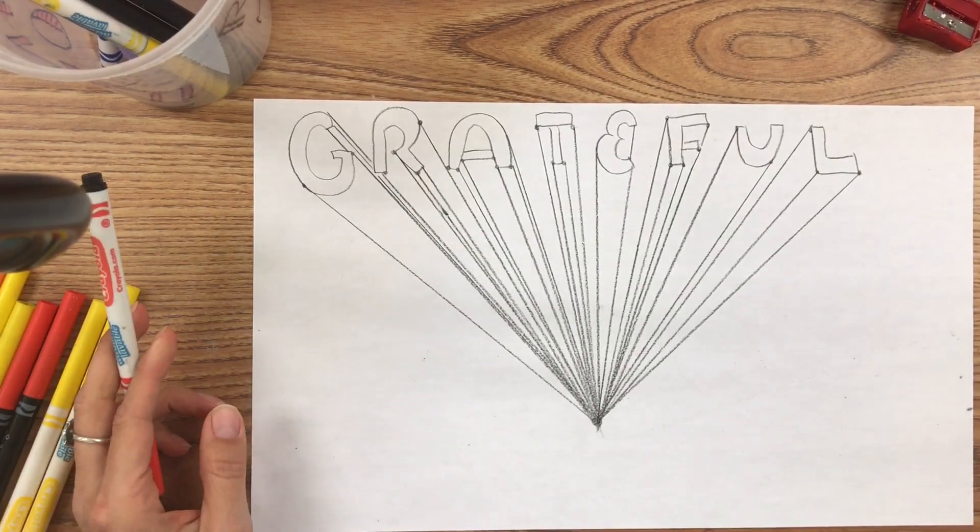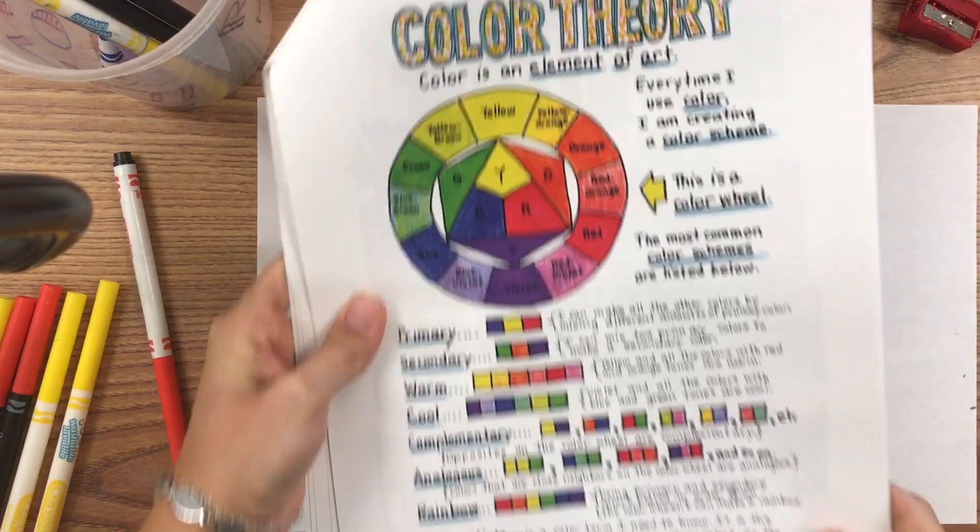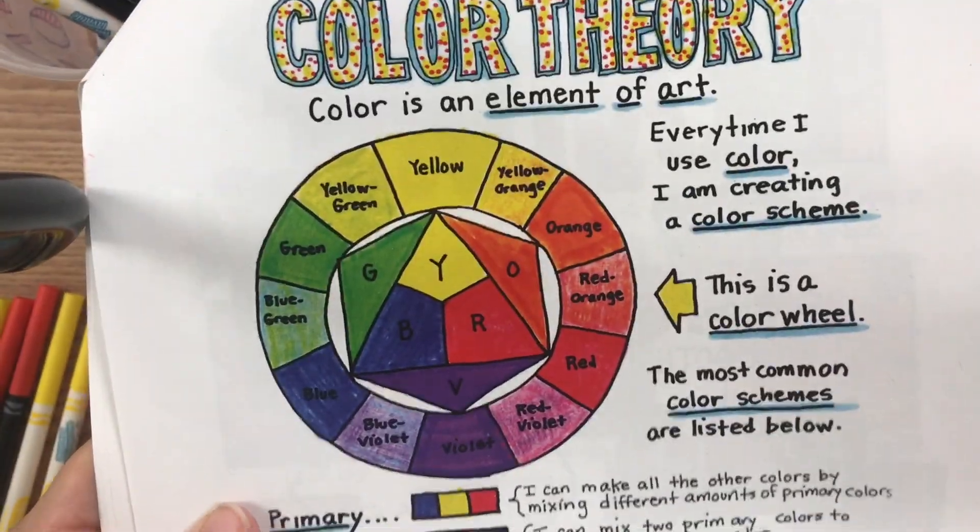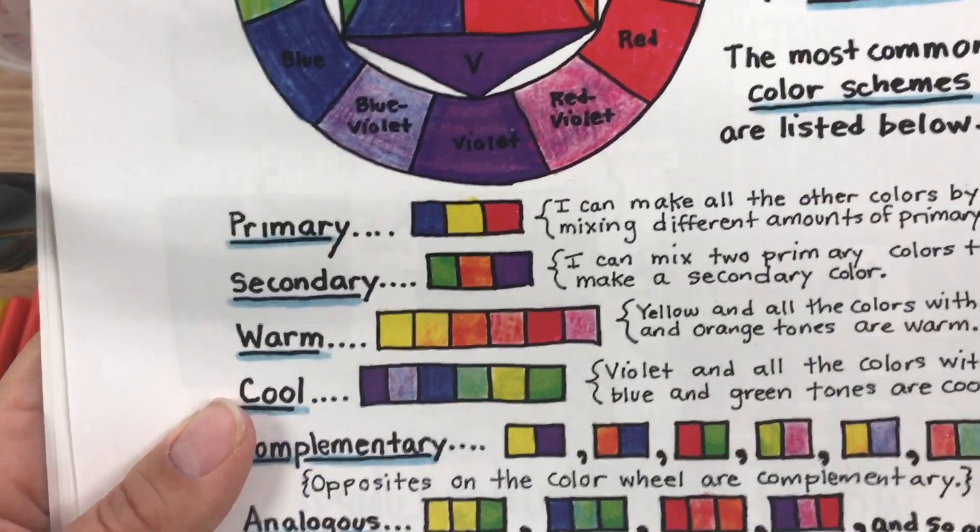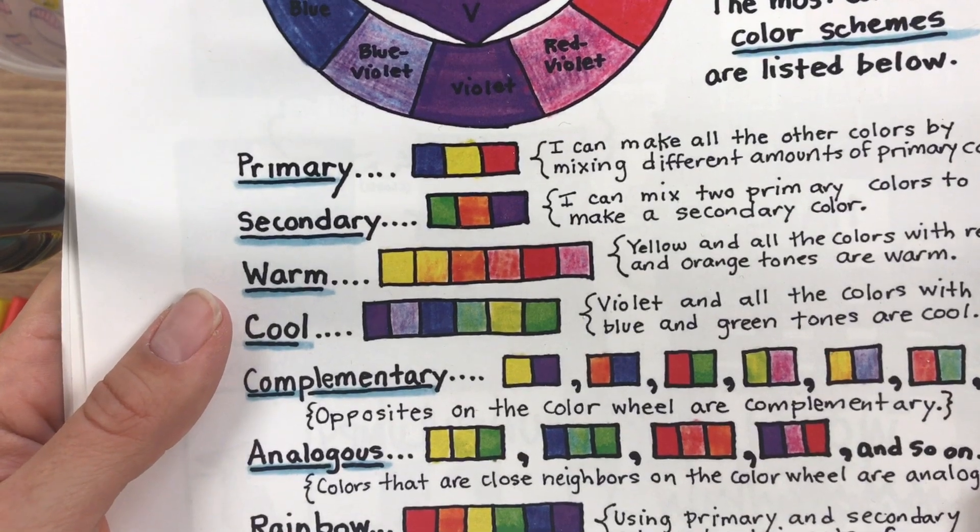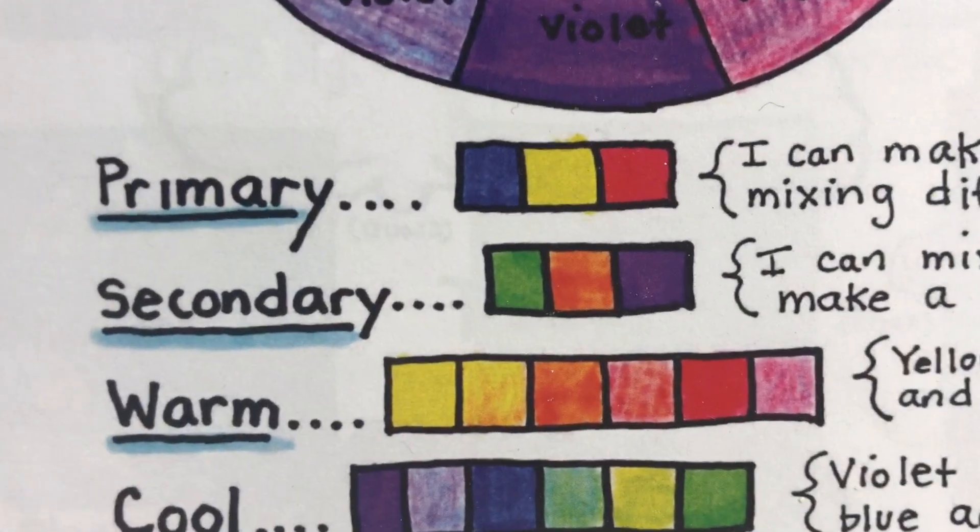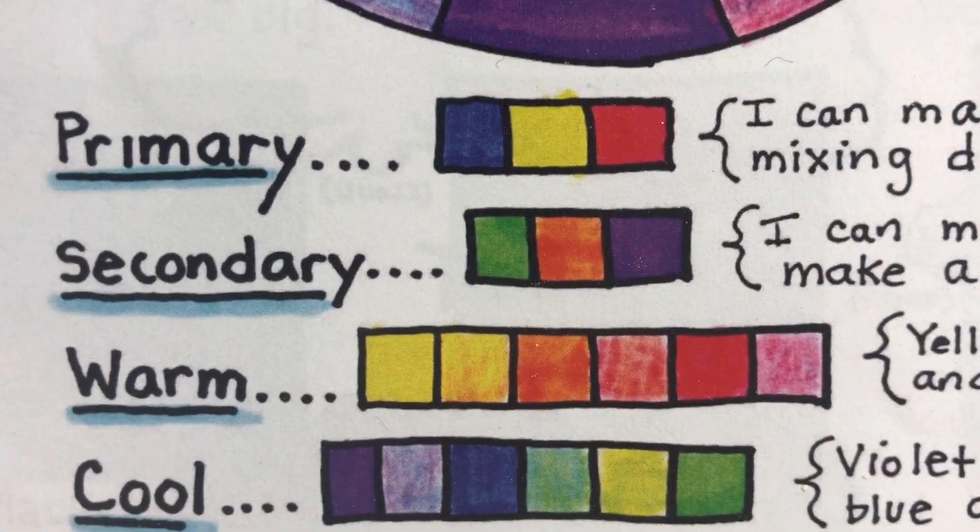Once you're finished with all of the lines connecting to the vanishing point, choose a color harmony like primary colors, secondary colors, cool colors, or warm colors to color your word with.